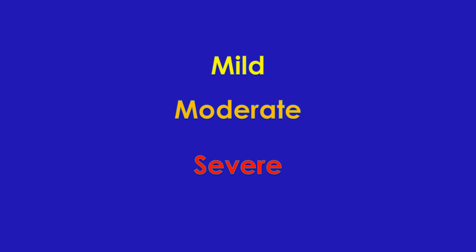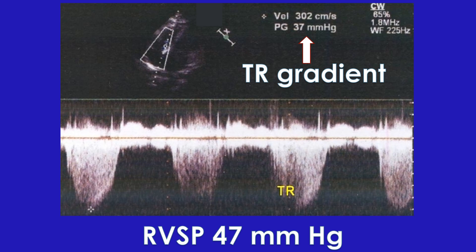When there is tricuspid regurgitation, the pressure difference between the right ventricle and right atrium can be calculated. This is usually mentioned as TR or tricuspid regurgitation gradient. A nominal value of 10 mmHg for the right atrial pressure is added to this gradient and mentioned as the estimated right ventricular systolic pressure or RVSP. An elevated RVSP implies pulmonary hypertension if there is no pulmonary stenosis.